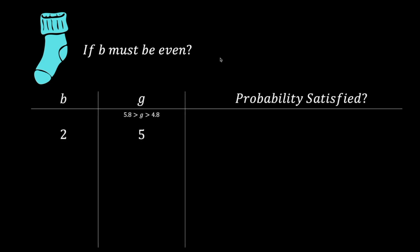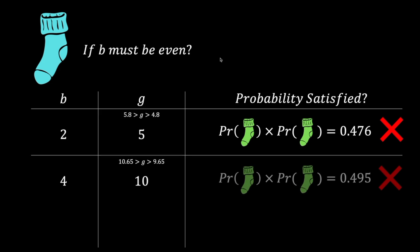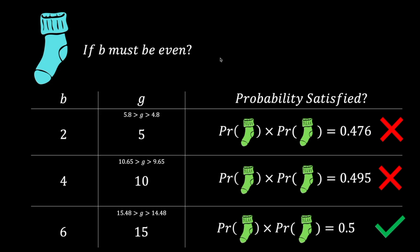What if instead b must be an even number? So b can go from 2, 4, 6, etc. What is the smallest value of n then? Let's test that out. When there are 2 blue socks, by the inequality, g is 5, which unfortunately does not satisfy the probabilities. Similarly, for 4 blue socks. However, at 6 blue socks, with 15 green socks, the required probability is achieved.